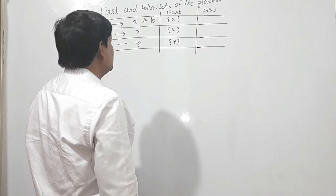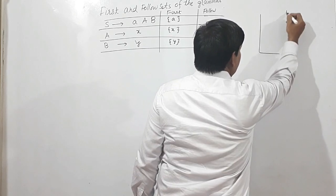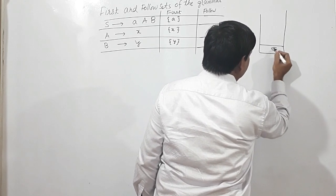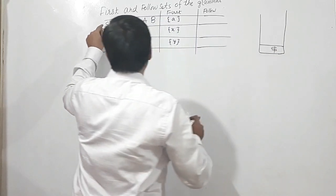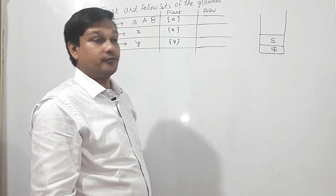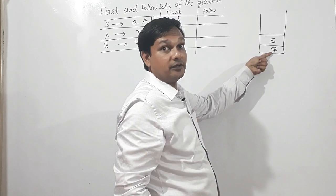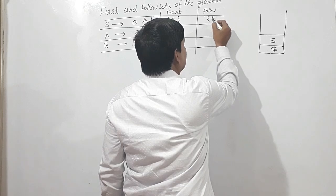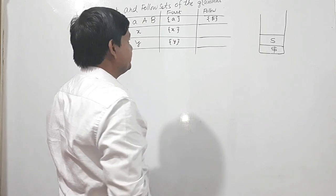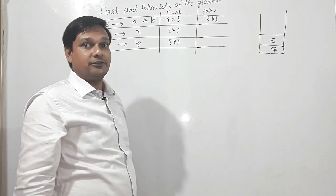Now we shall see the Follow sets. We assume that at the bottom there is a dollar symbol, and this dollar symbol is also on the stack. Follow of S is dollar, so I will write dollar as Follow of S. Always remember: the starting symbol's Follow will always be dollar.